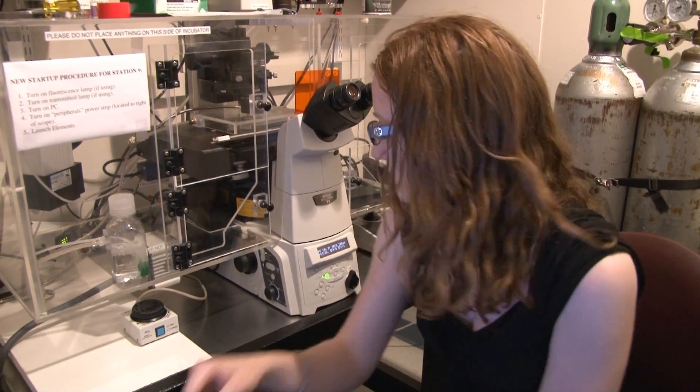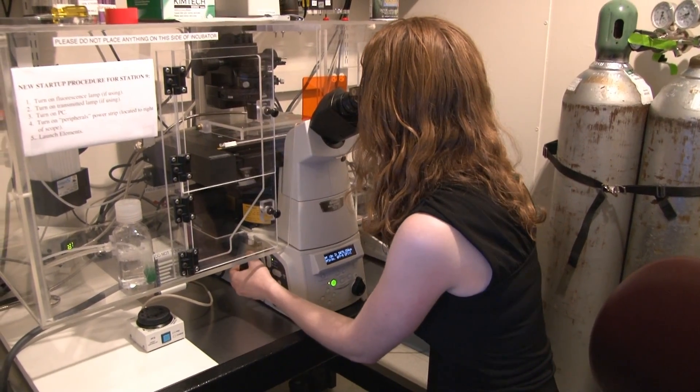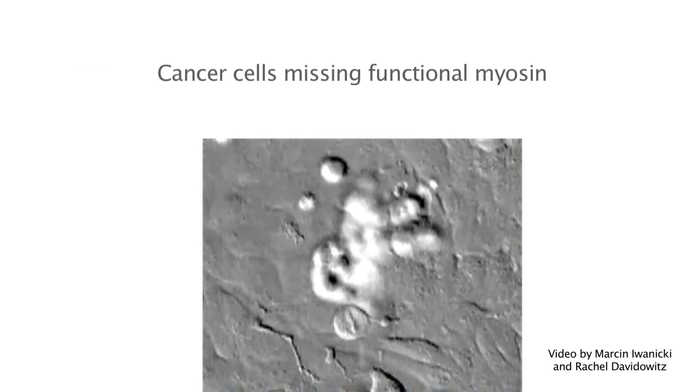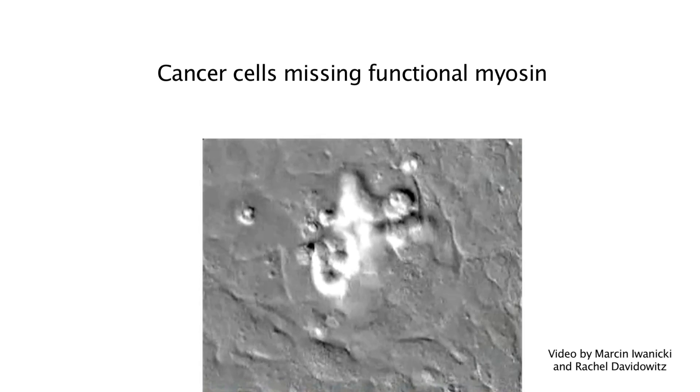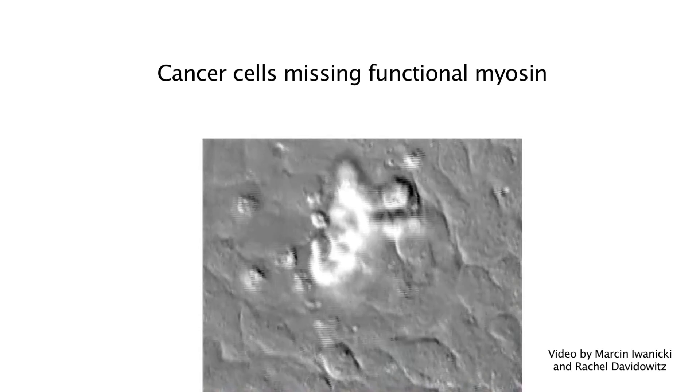The scientists were able to block this bullying behavior. For example, here's what happened when the team interfered with myosin. The cancer cells maintained their original position, resting on top of the mesothelial cells. They failed to launch an invasion.